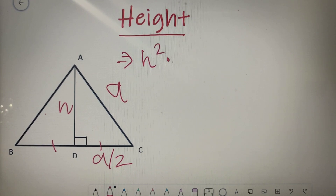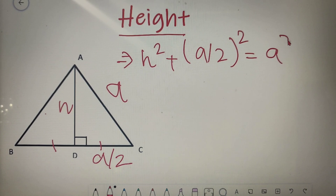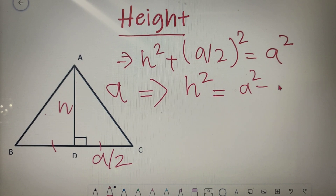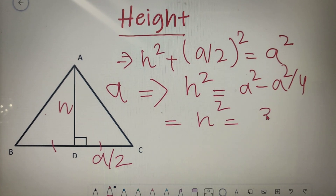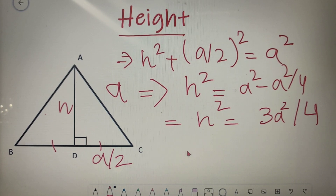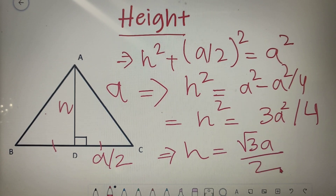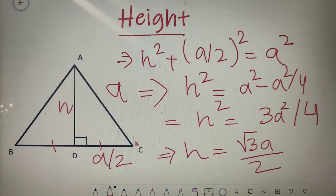Upon applying the Pythagoras theorem, it gives that H² + (A/2)² = A². Upon solving, H² = A² − A²/4, which gives H² = 3A²/4. Finally, taking square roots on both sides, we get H = √3A/2. When taking square roots we generally get a plus and a minus sign, but since the side of a triangle can never be negative, we take only the positive part.